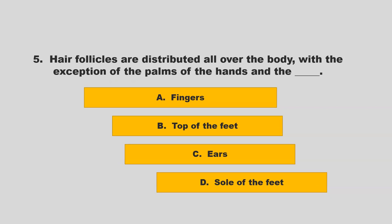Hair follicles are distributed all over the body, with the exception of the palms of the hands and the blank. Is it fingers, top of the feet, ears, or sole of the feet? If you chose D, sole of the feet, you are correct.